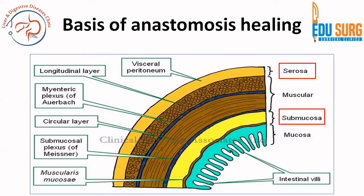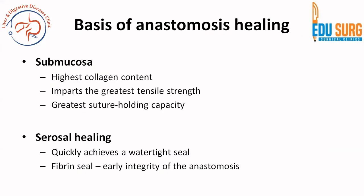This simple diagram shows the four layers of the intestinal wall that all of you must know: mucosa, submucosa, muscularis, and the serosa. Out of these, the submucosa and the serosa are most important in anastomosis. The submucosa has the highest collagen content, imparts the greatest tensile strength to the anastomosis, and also has the greatest suture-holding capacity. That is why sutures like Lambert — which are extramucosal single-layer anastomotic sutures — require the submucosa to be taken.